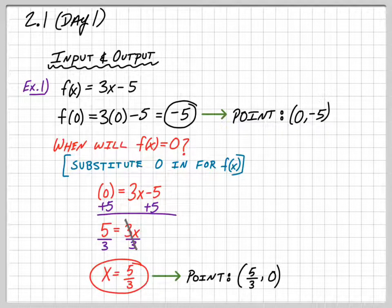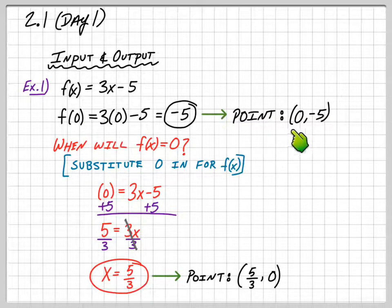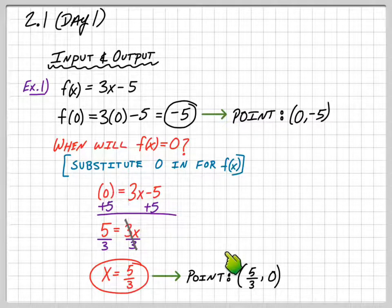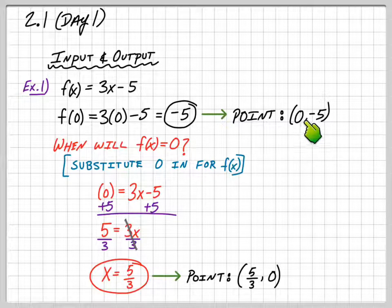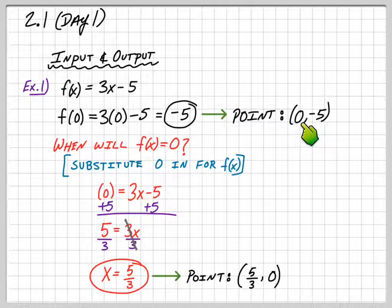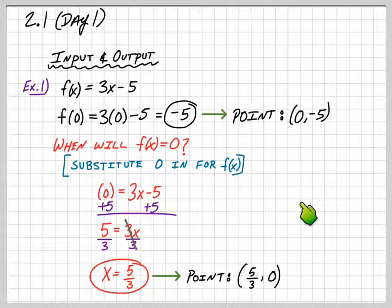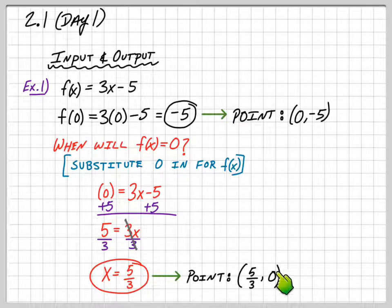So that point would be (5/3, 0). We still have two points on the graph. One was plugging 0 in for x to get (0, -5). The other was plugging 0 in for y to get (5/3, 0). Both of these are intercepts. The point (0, -5) is the y-intercept, and the point (5/3, 0) is the x-intercept.